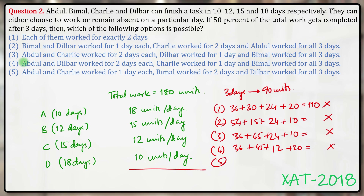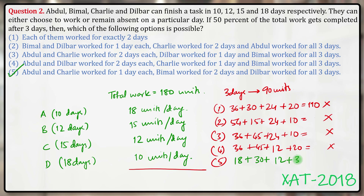This means the answer is option 5. For confidence, let's verify: Abdul and Charlie work for 1 day each — Abdul 1 day = 18, Charlie 1 day = 12, totaling 30. Bimal worked for 2 days: 15×2 = 30. Dilber worked for all 3 days: 10×3 = 30. So 18 + 12 + 30 + 30 = 90 units. That is the correct answer.